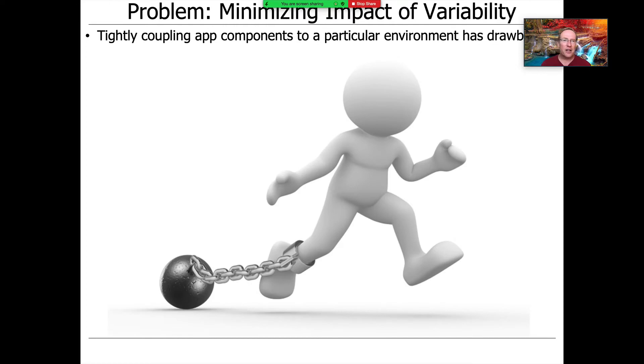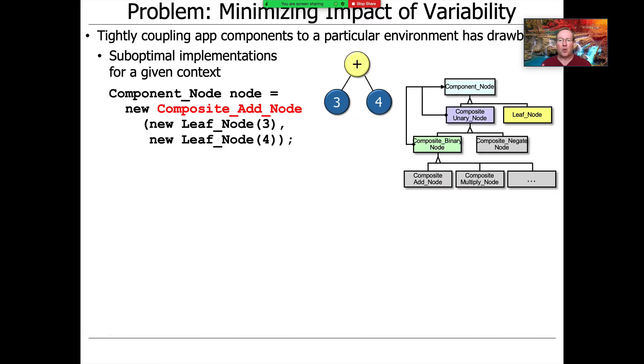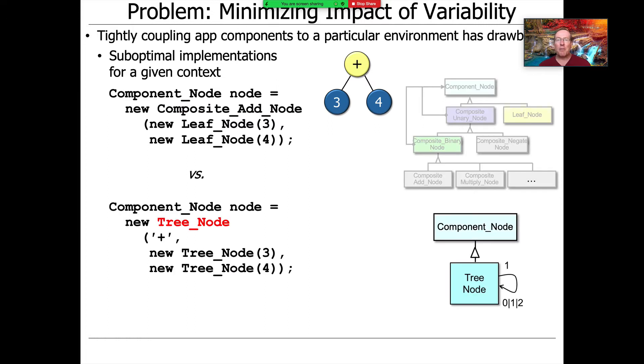One thing is you end up with suboptimal implementations for a given context. If you have lots of memory but you've tightly coupled yourself to a solution that's inefficient, that's undesirable. There might be another situation where you have less memory, but you want to run in a way that will be maybe a little slower but take up less space.